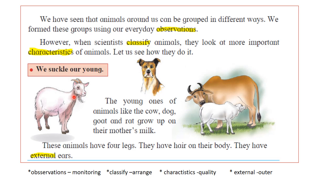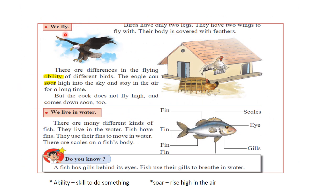Mammals give birth to young ones like themselves and feed them on mother's milk. Next is birds. Birds have only two legs and two wings to fly with, and their body is covered with feathers. There are differences in flying ability — the eagle can soar high into the sky and stay in the air for a long time, but the cock does not fly very high and comes down soon. Two legs, wings and a beak are the specialties of birds.